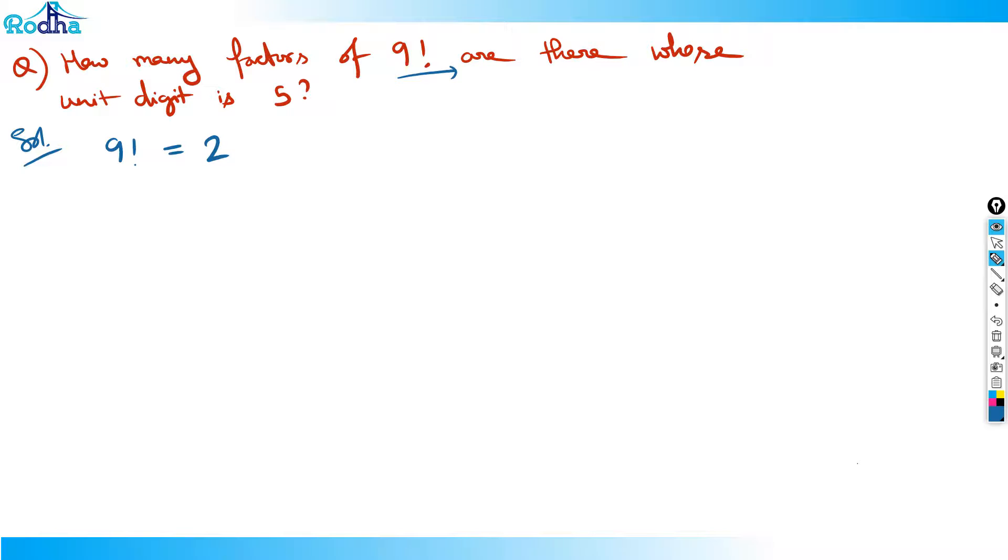What is this 9 factorial? Just factorize it guys. I think powers of 2 will be how much? 2 power 7 should be. 3 cube into 5 power 1 into 7 power 1. It should be 3 power 4. So let's solve this question guys. Let's factorize 9 factorial. What is 9 factorial? 9 factorial is 2 to the power 7, then 3 to the power 4 into 5 power 1 into 7 power 1. That's it. Prime factorization. So now obviously, just leave out 2, just leave out 2 guys.